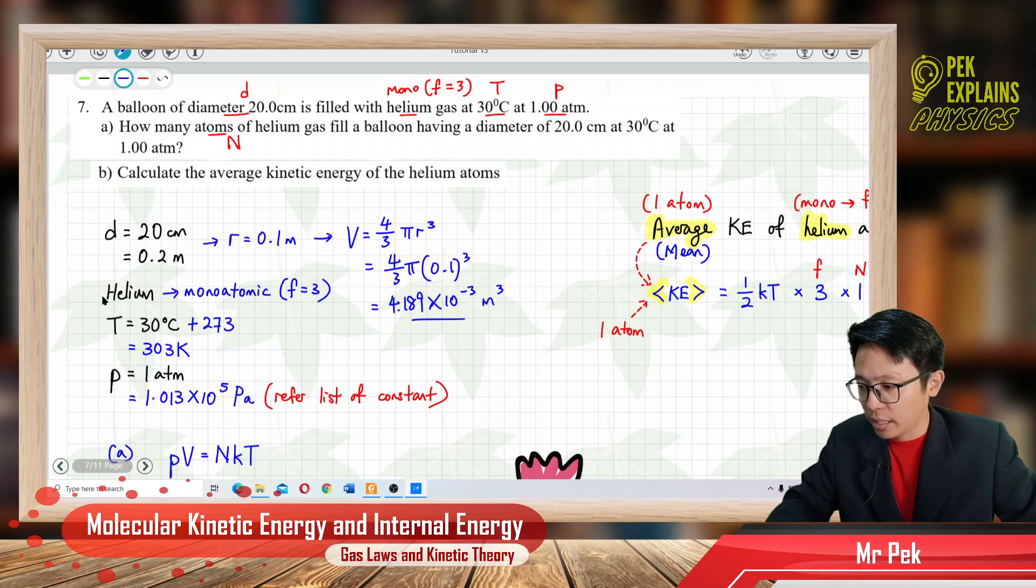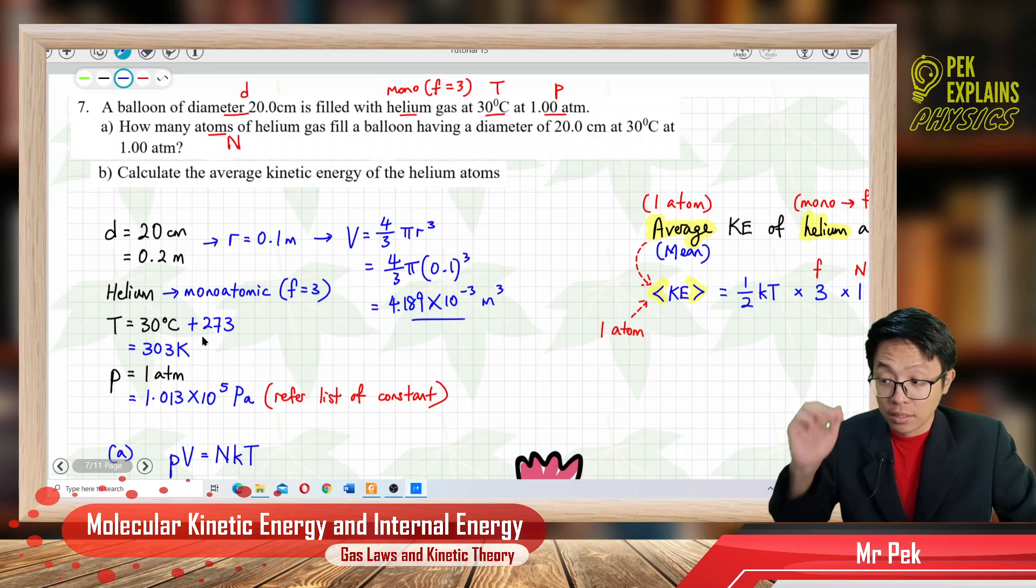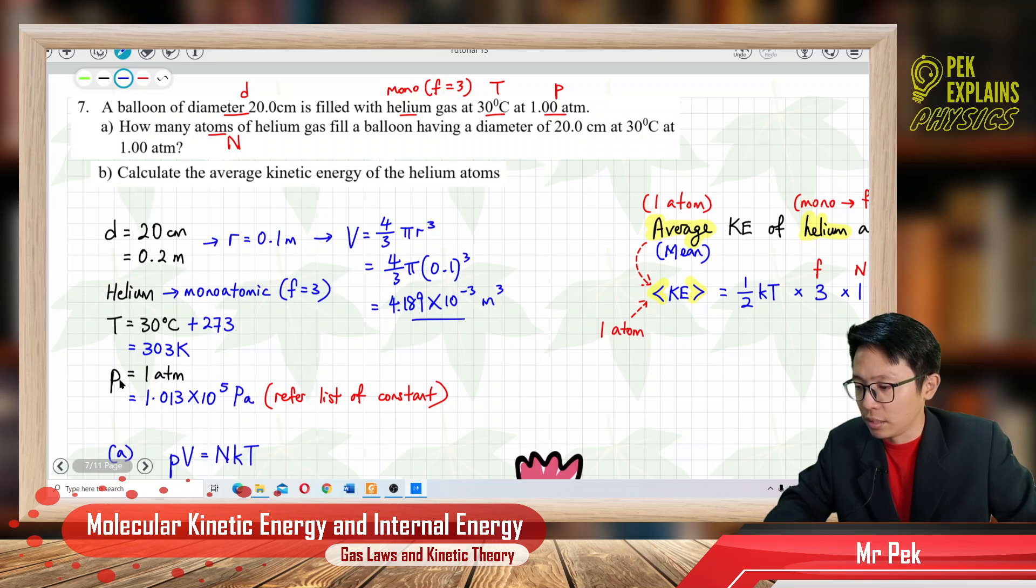This is helium, monoatomic, with F equal to 3, 3 degree freedom. Temperature in degree Celsius must change to Kelvin. This chapter must always change to Kelvin, use SI unit. So plus 273, you get 303 Kelvin. And then, the pressure also must change to Pascal. The atmospheric pressure need to change to Pascal, which is SI unit.